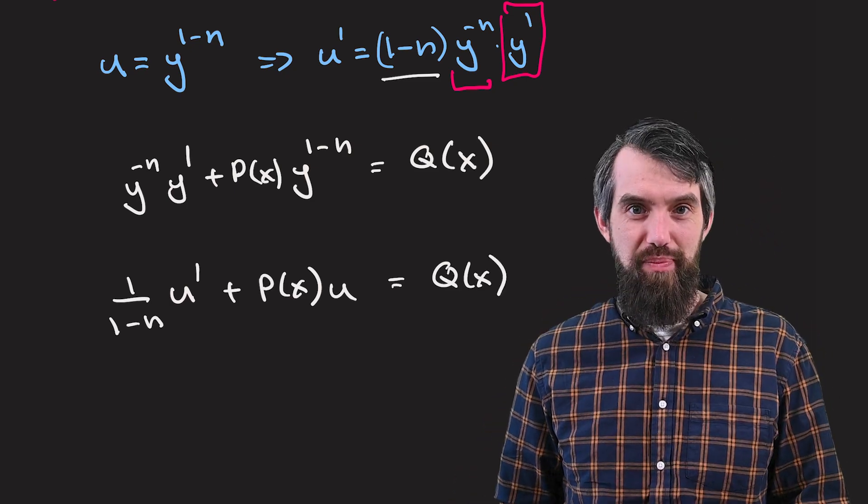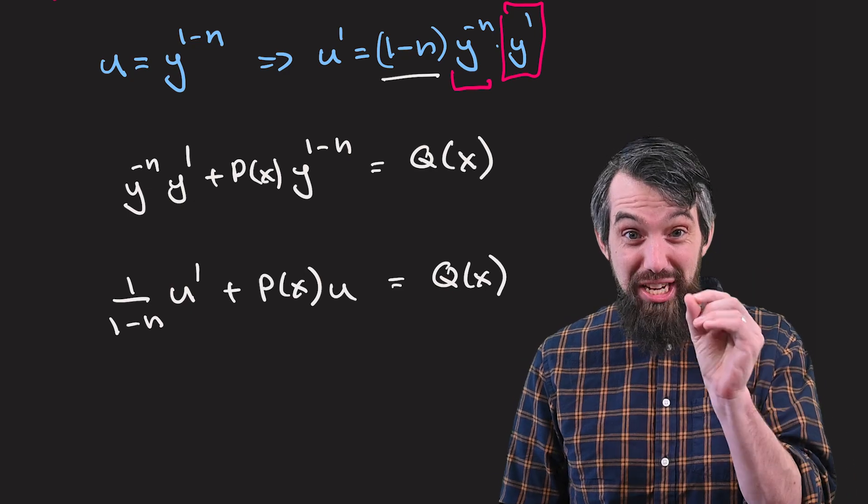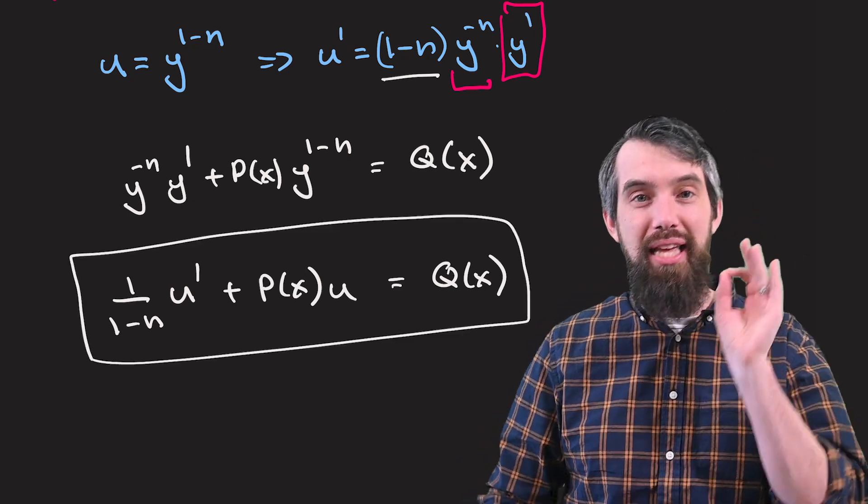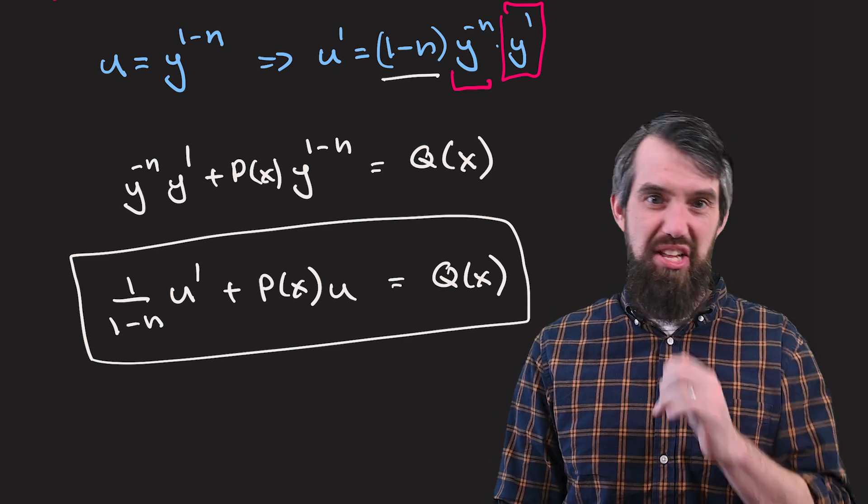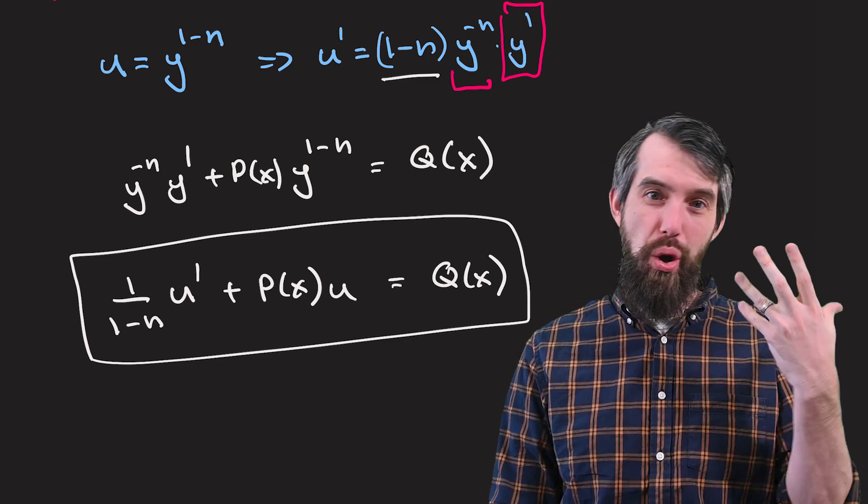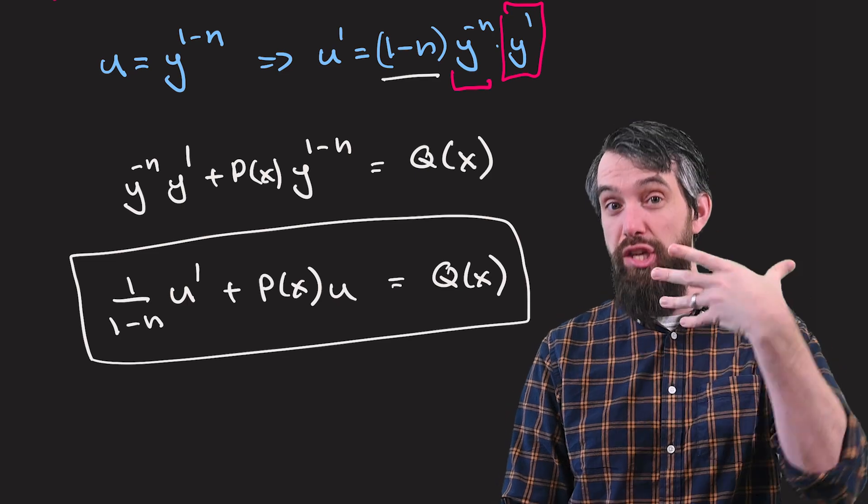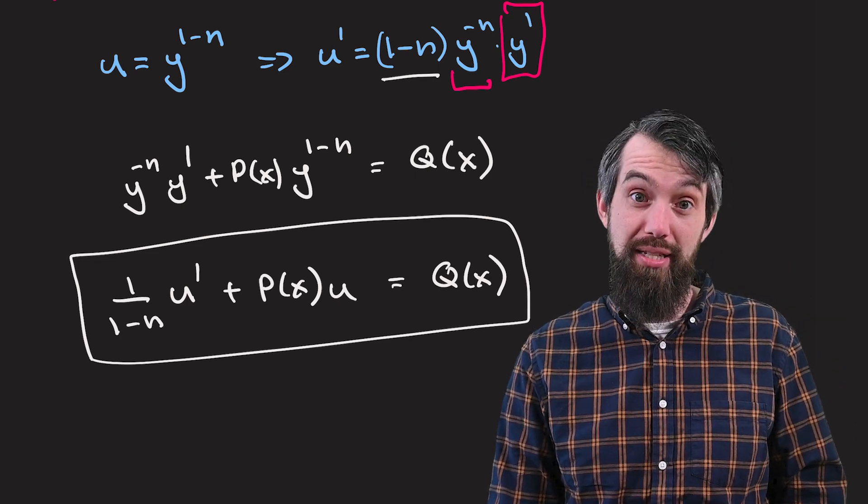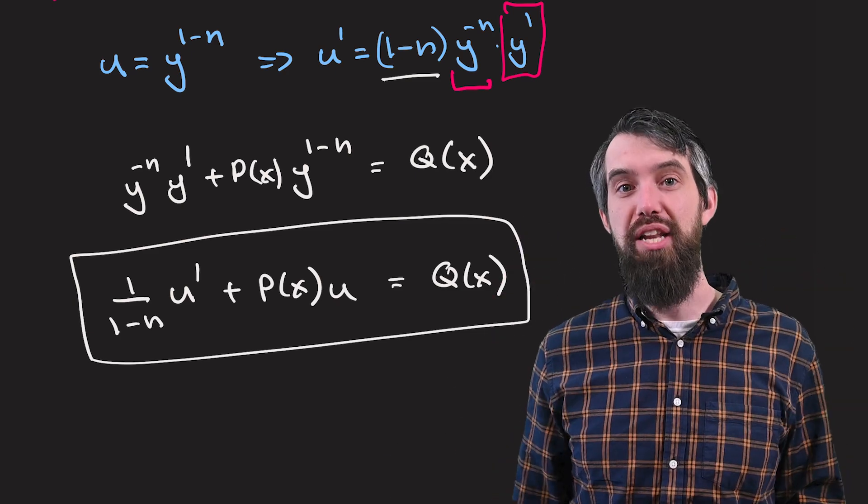All right. So I've made a change. And look what's happened. In this change of variables, the equation that I have, this one, is now a linear first order equation. It's got a u prime, the coefficient of 1 over 1 minus n. It's got a u with the coefficient of p of x, and it's got a 1 with the coefficient of q of x. This is a first order linear differential equation.